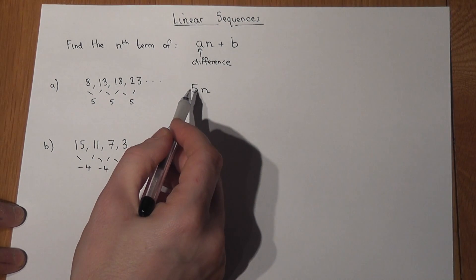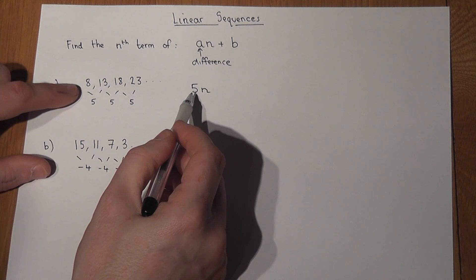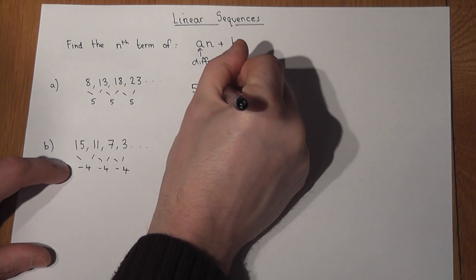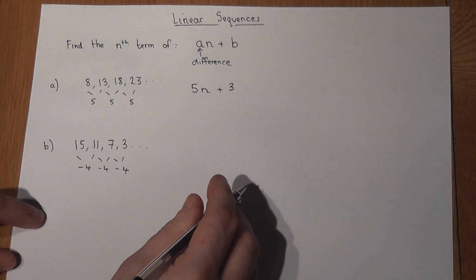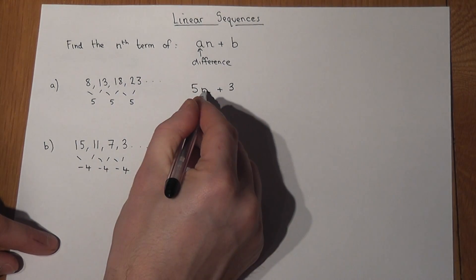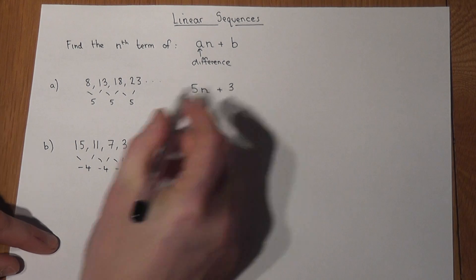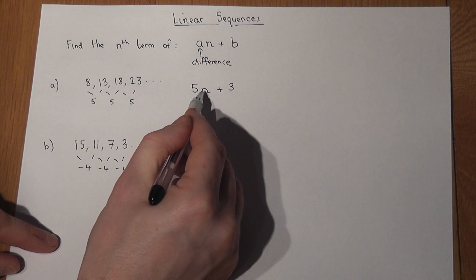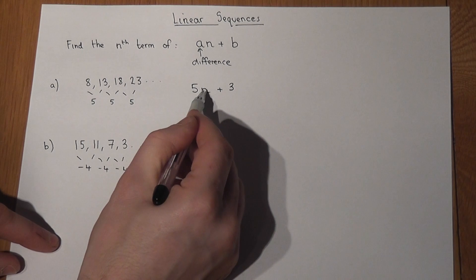b is another unknown number. All you do to find b is think: I've got a five here and I want my sequence to start at eight — how do I get from five to eight? I've got to add three. To show why this works: if n is one, five times one is five, plus three equals eight.